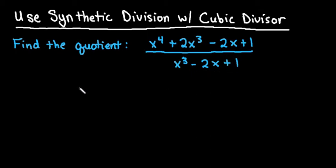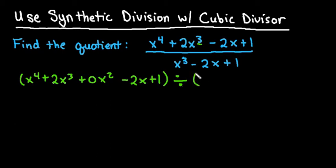What we need to do first is make sure that both the numerator and the denominator or the dividend and the divisor do not have any missing degrees. If you look at this one, we have x to the 4th, x cubed, and then we're missing our x squared term. So I'm going to rewrite this as x to the 4th plus 2x cubed plus 0x squared minus 2x plus 1. And we need to do the same thing for the divisor, so the divisor would be x cubed plus 0x squared minus 2x plus 1.